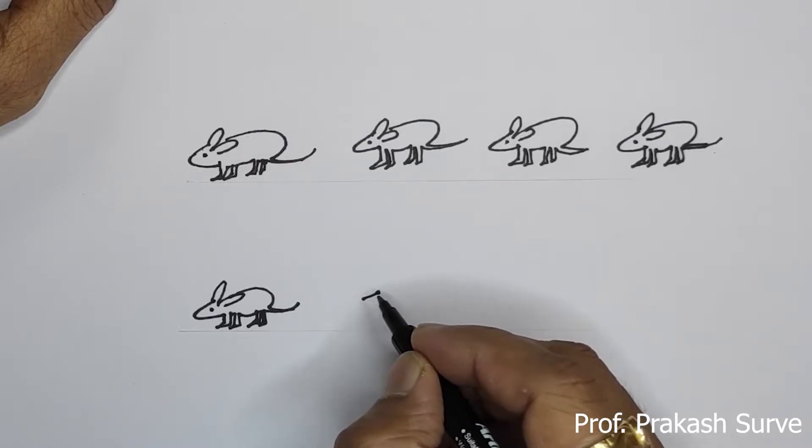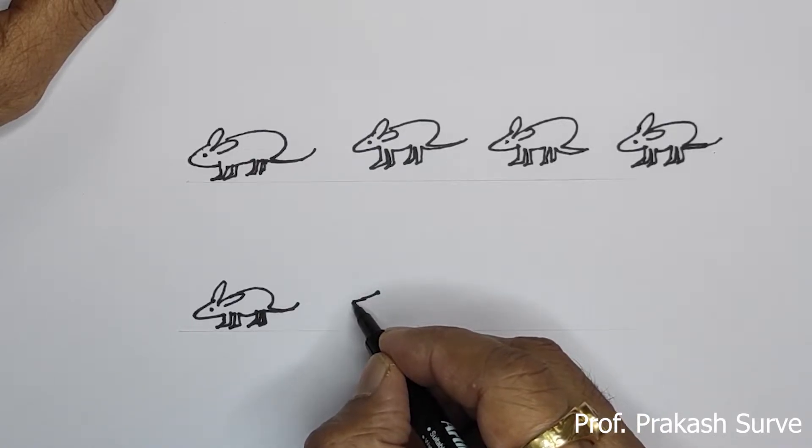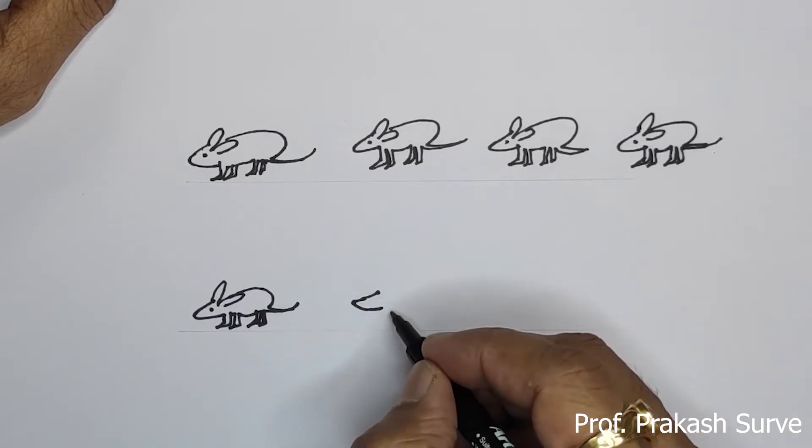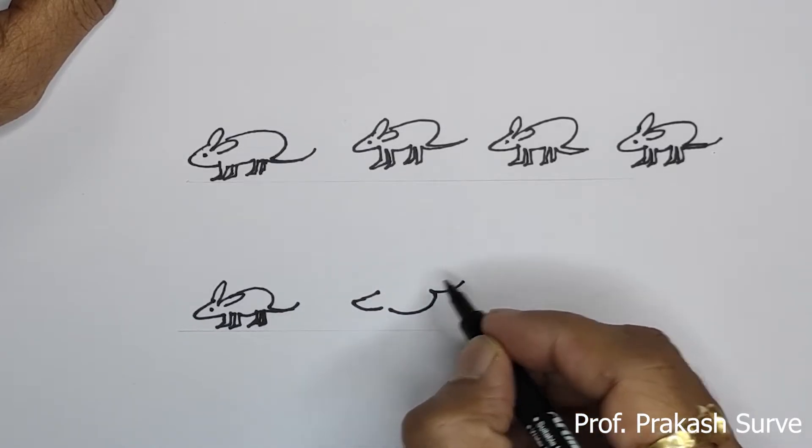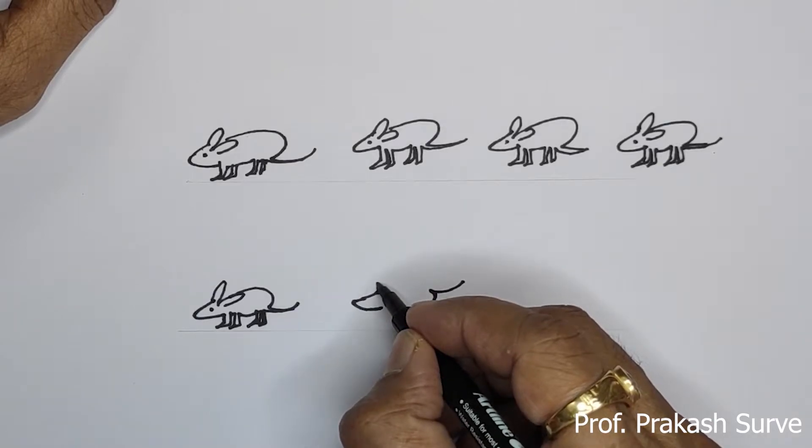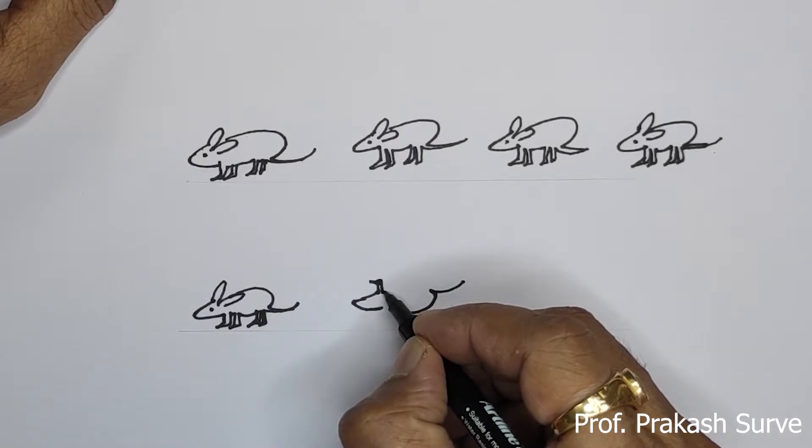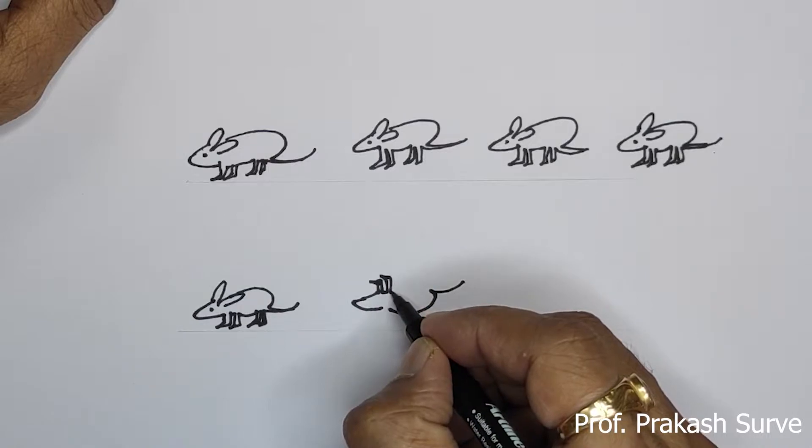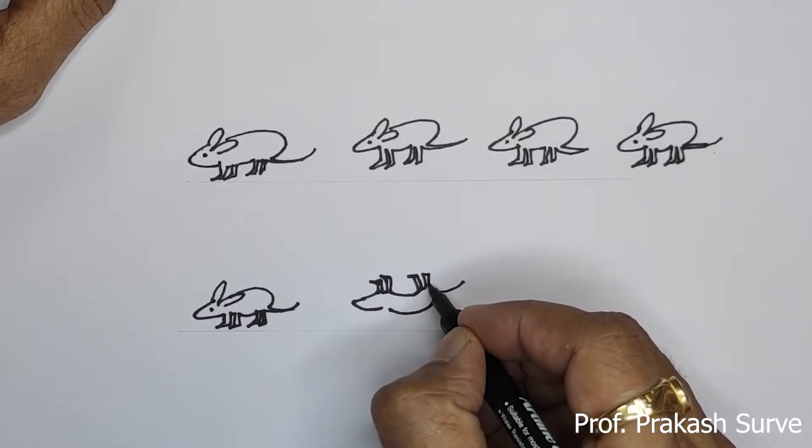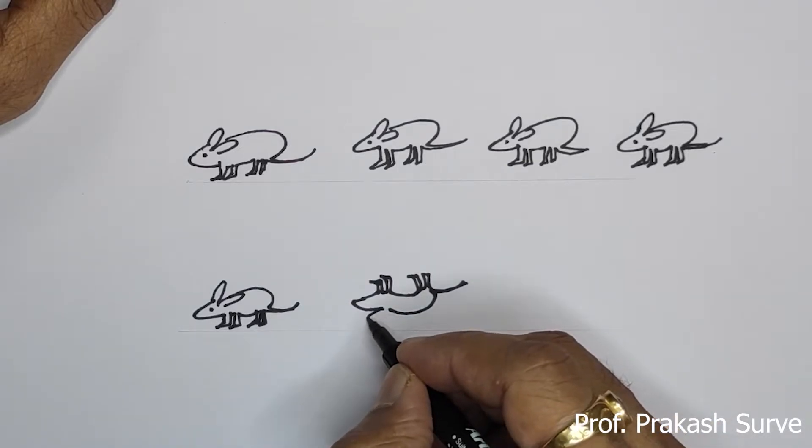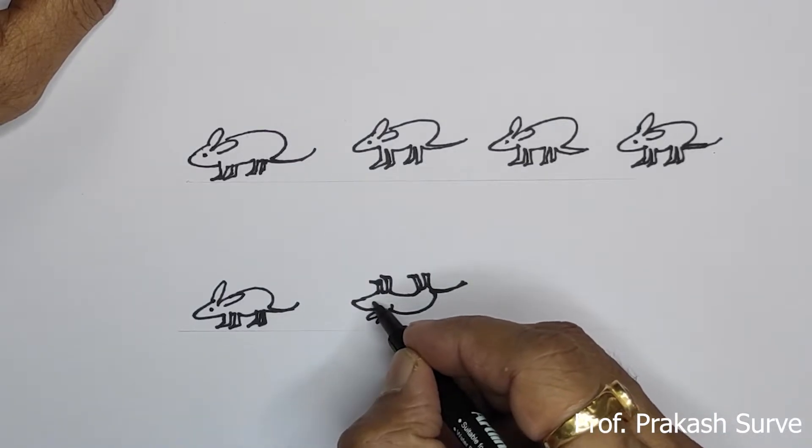Now second rat is there which is a dead, so ulta. This shape may get changed, no problem. So you got the, this is a dead rat or mouse we can see.